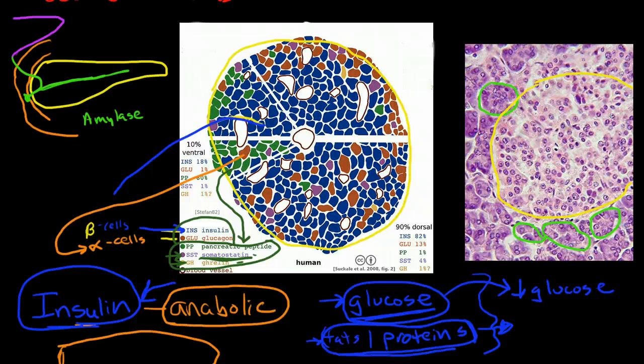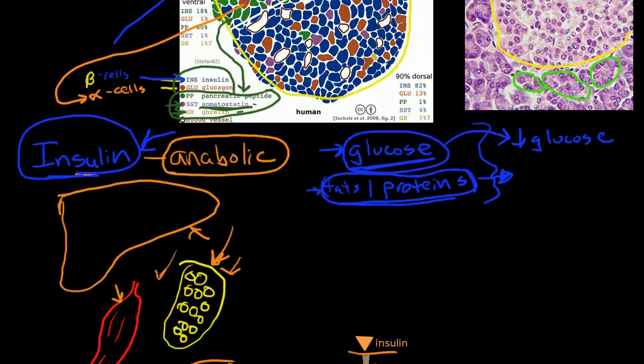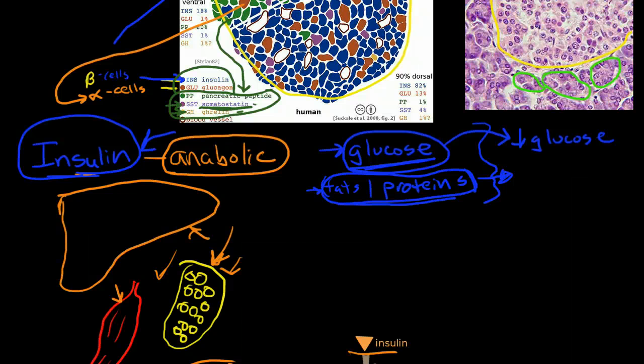Now, glucagon is actually stimulated by exactly the opposite. Glucagon is stimulated to be released from the alpha cells when there are low levels of glucose.